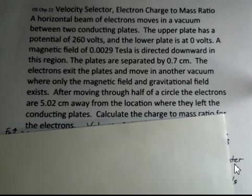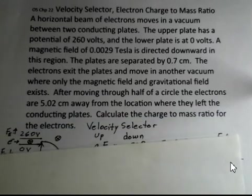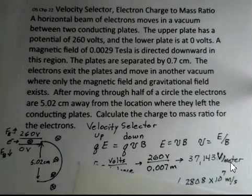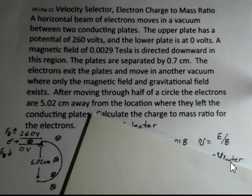They're 5.02 centimeters away from the location where they left the conducting plates. We want to calculate the charge to mass ratio, and along the way we're going to calculate the velocity coming out of the velocity selector. Let's take a look at a diagram here on the left, the beam of electrons traveling through there.